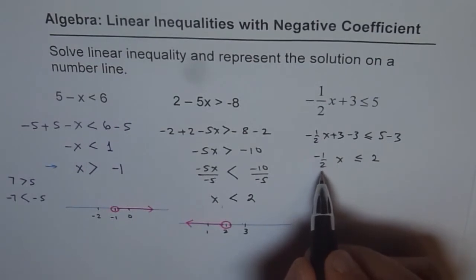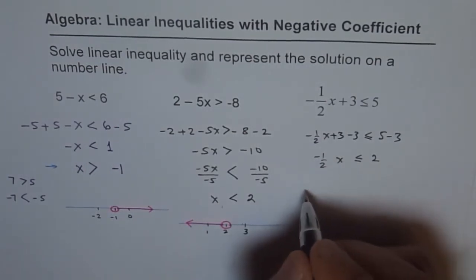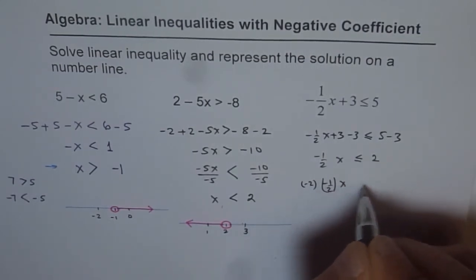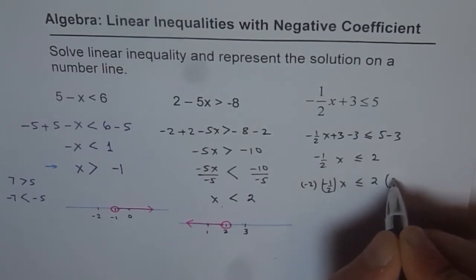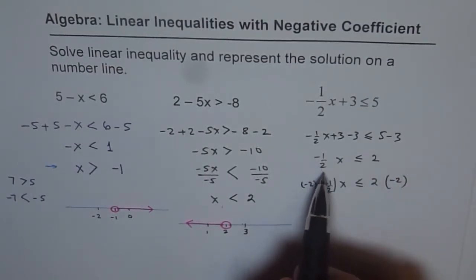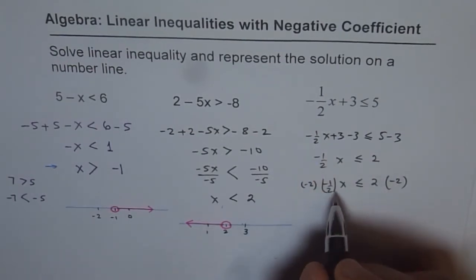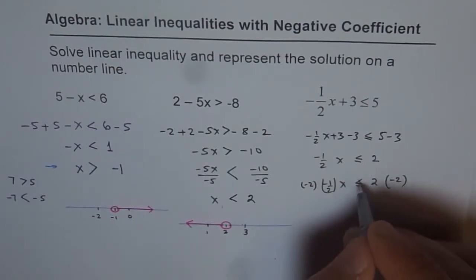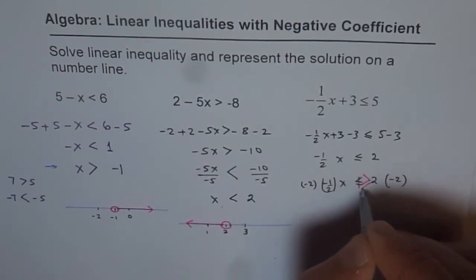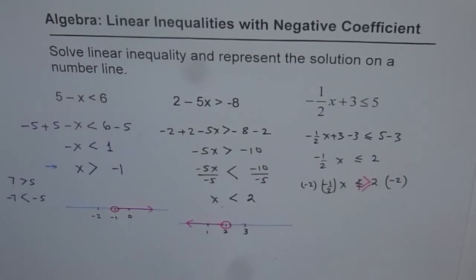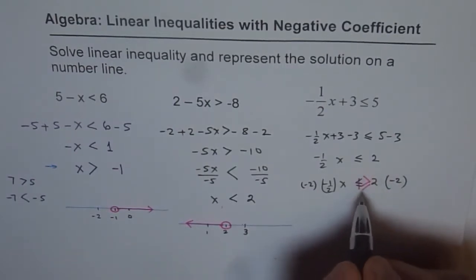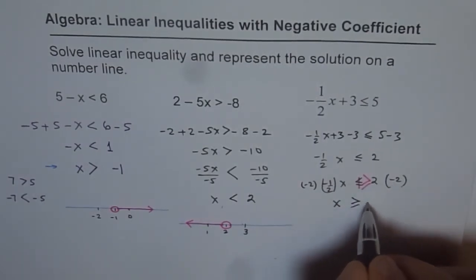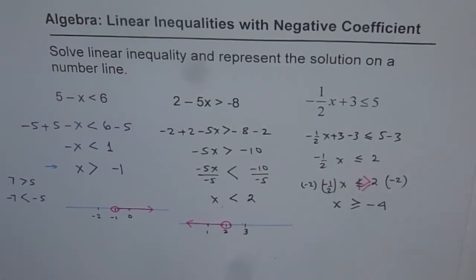Now you should multiply by minus 2 on both sides. So you get minus 2 times minus half x is less than equals to 2 times minus 2. So when you multiply by minus 2, you get rid of minus half. So you get plus sign. But what you should do with this sign? You have to reverse this symbol to greater than equal to. Do you understand? So that is what you should remember to do. And that could be a big error. So you get x is greater than equals to 2 times minus 2 as minus 4. So that is the solution.